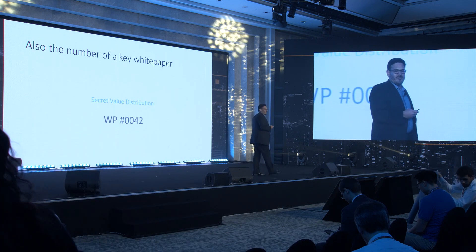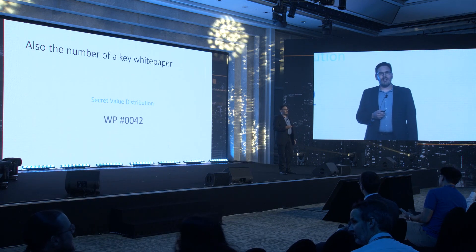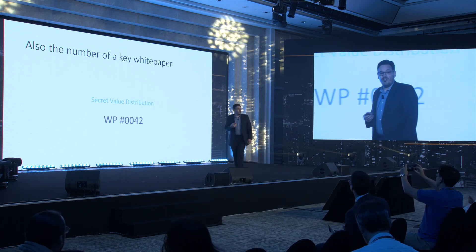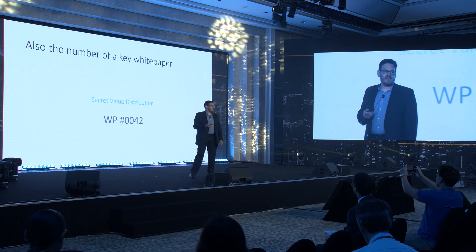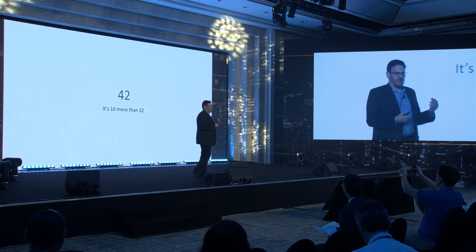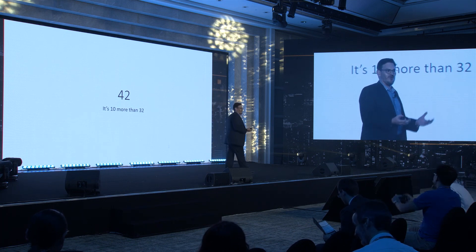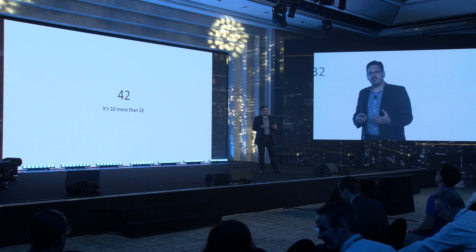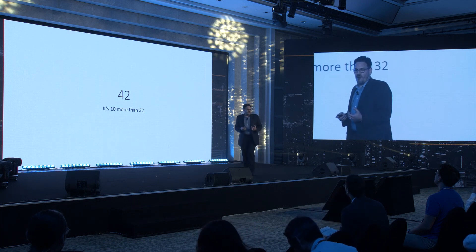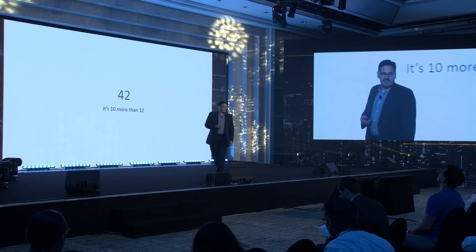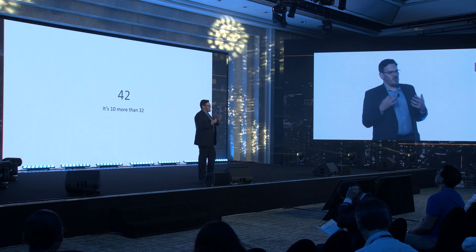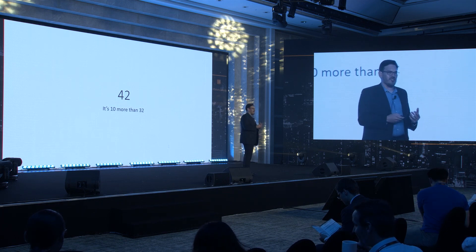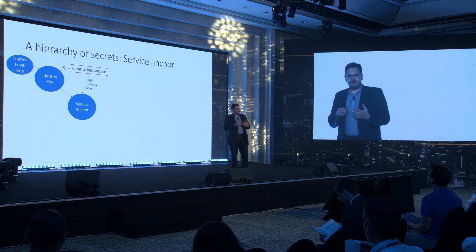42 is also the number of a key Bitcoin white paper called Secret Value Distribution, which I hope to show you today can provide us with new and more simple ways to manage user privacy. 42 is also 10 more than 32, and as a lot of you would know, BIP32 is the Bitcoin improvement proposal that almost all wallets use today. It sits at the root of current methods used to create keychains, but its somewhat simplistic approach adds complexity and makes identity services much harder to establish and manage.